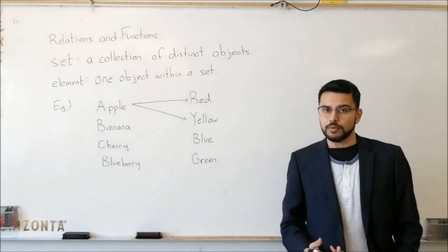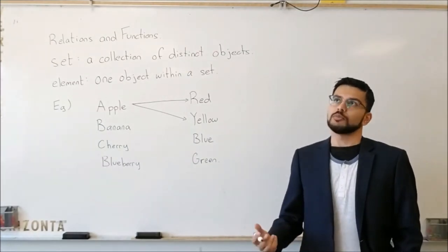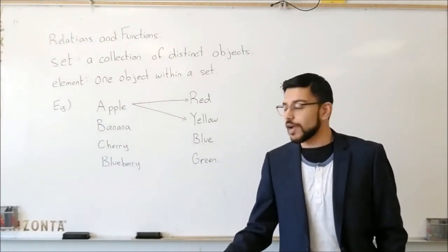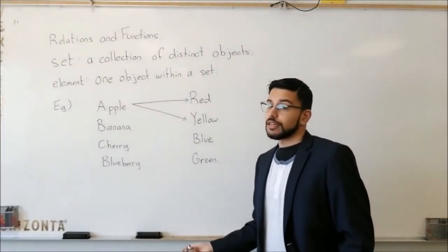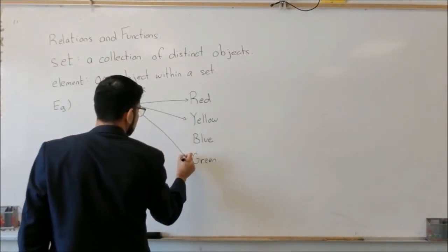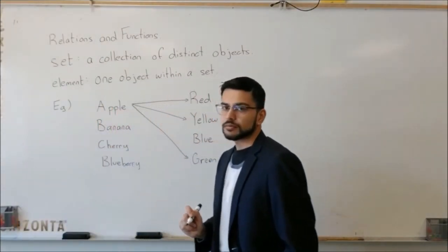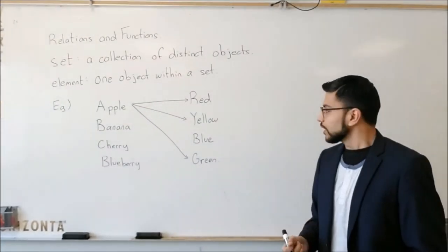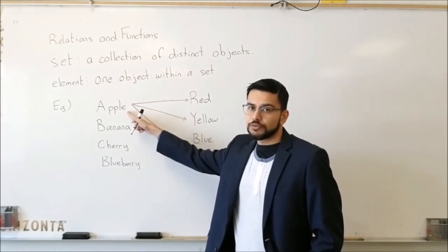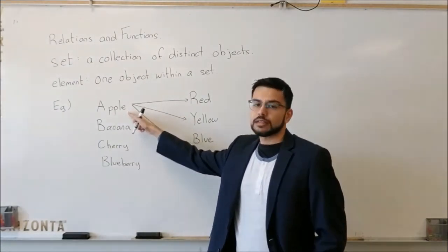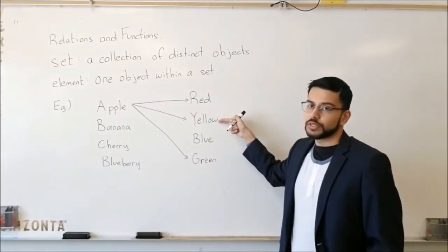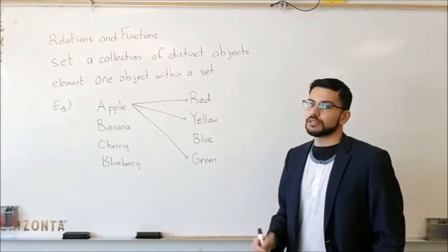Now I've never seen a blue apple before, and I guess you could paint an apple blue. But for the sake of this, let's say we went to a grocery store, you're not going to find a blue apple. You might, however, find a green apple. So what I'm doing is I'm relating the elements from one set. So apple is the element from my first set, and I'm relating them to elements in my second set. So I can say the apples are related to red, it's related to yellow, and it's related to green.